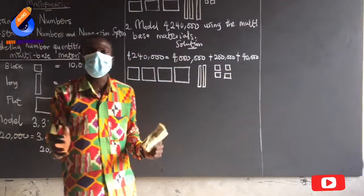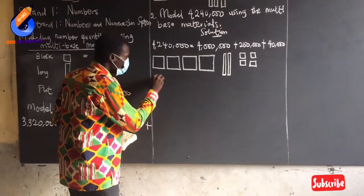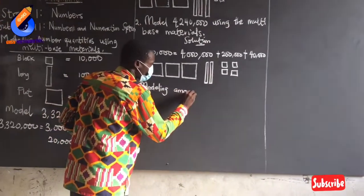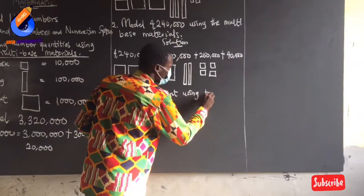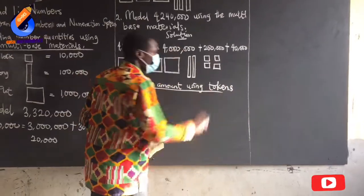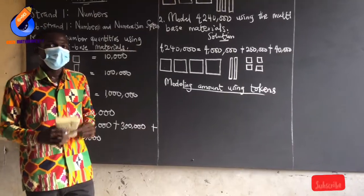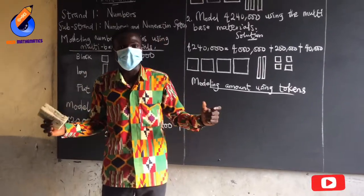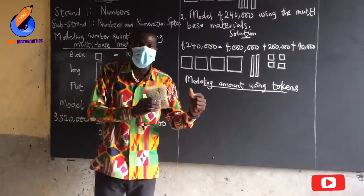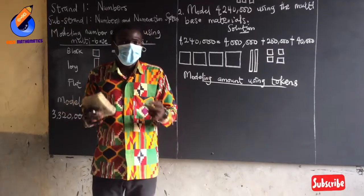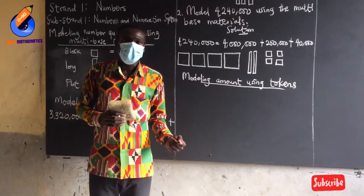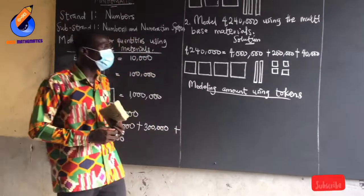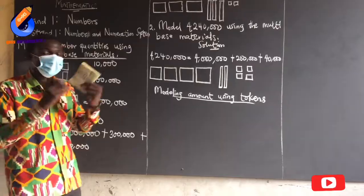Now let's look at how to model a given amount using tokens. What are tokens? The tokens are the money you put together to get one amount. If you are going to buy an item which costs 20 cedis, I can have 2 ten-cedi notes, or 4 five-cedi notes, or 1 ten-cedi note and 2 five-cedi notes to make 20 cedis. So how can you use a token to model a given amount?